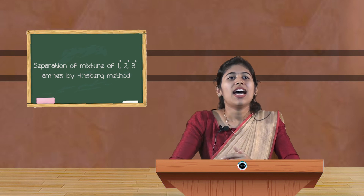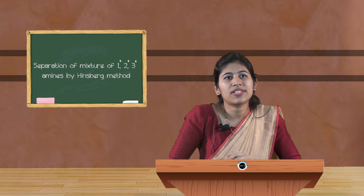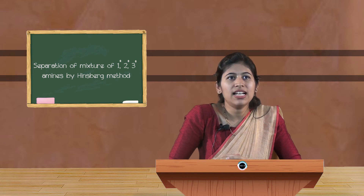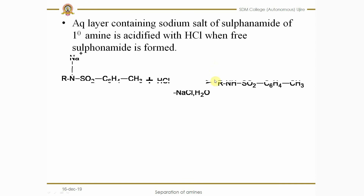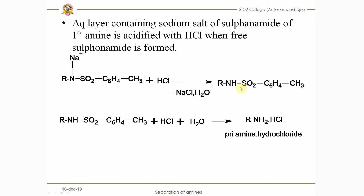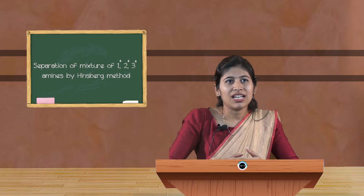The aqueous layer contains the sodium salt of the sulfonamide of the primary amine. When it is acidified with HCl, the free sulfonamide is formed, and it reacts with HCl in the presence of water to give the primary amine hydrochloride. When this is then treated with sodium hydroxide, we obtain the pure primary amine. In this way, we get all three amines — primary, secondary, and tertiary — separated.